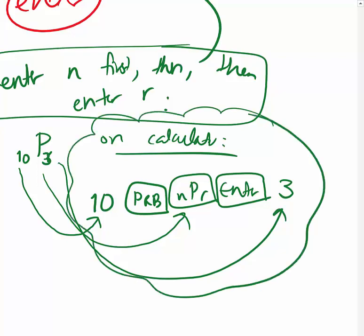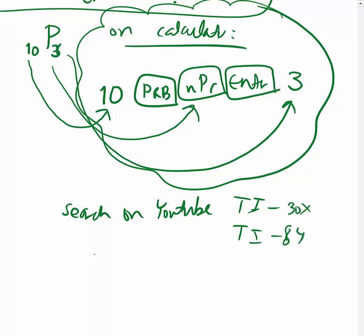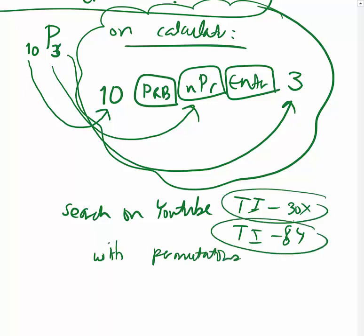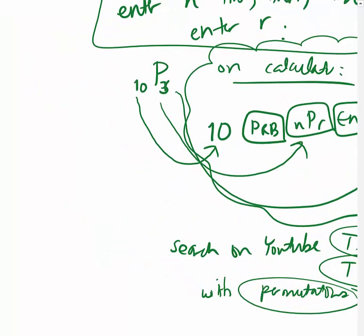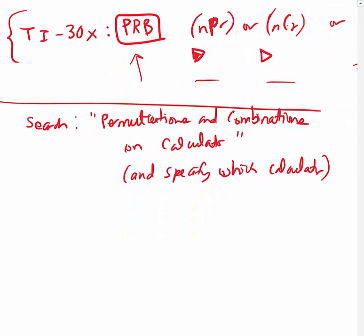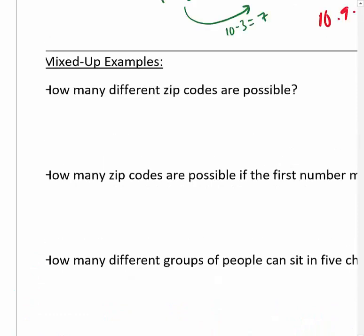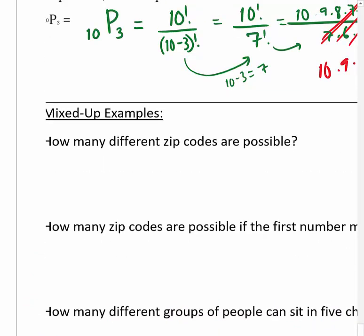If you can't figure it out, search on YouTube - type your calculator model (TI-30X, TI-84, etc.) and 'permutations.' Someone will have a video showing you how to use your calculator for that. If you have a different brand besides Texas Instruments, search permutations and combinations specifying which calculator you have.